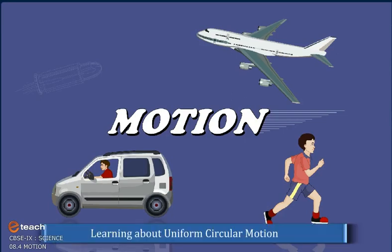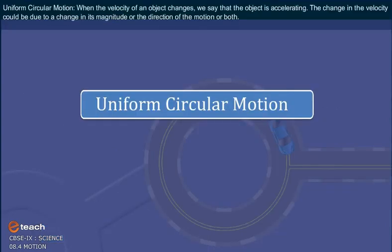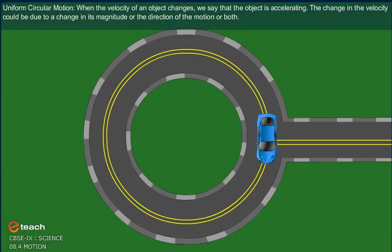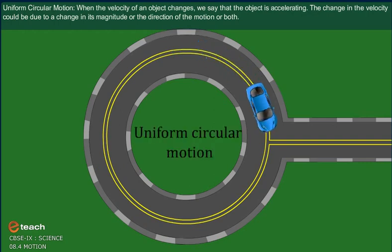Learning about Uniform Circular Motion. When the velocity of an object changes, we say that the object is accelerating. The change in the velocity could be due to change in its magnitude or the direction of the motion or both.